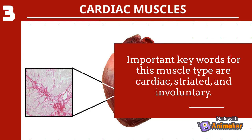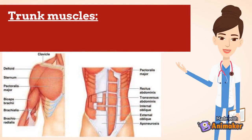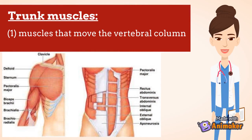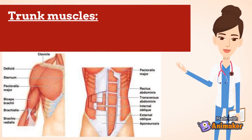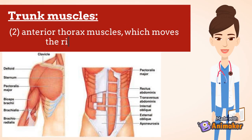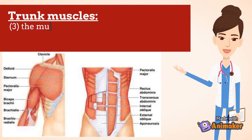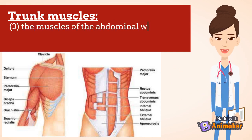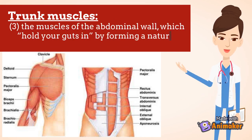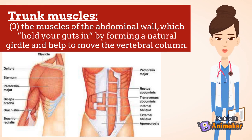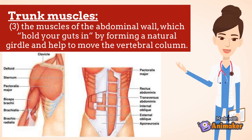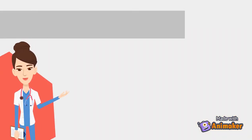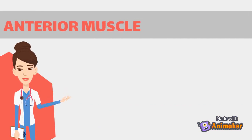The trunk muscles include: one, muscles that move the vertebral column; two, anterior thorax muscles which move the ribs, head, and arms; and three, the muscles of the abdominal wall, which hold the internal organs in place by forming a natural girdle and help to move the vertebral column. We will first discuss the anterior muscles.